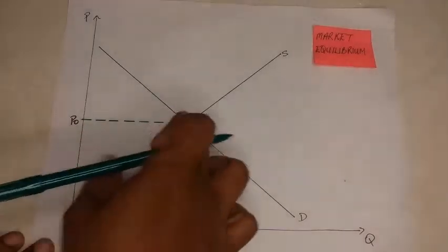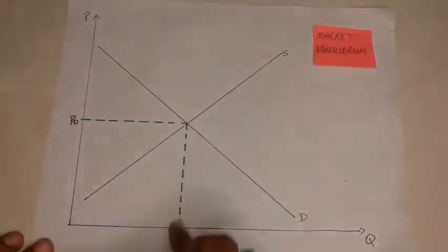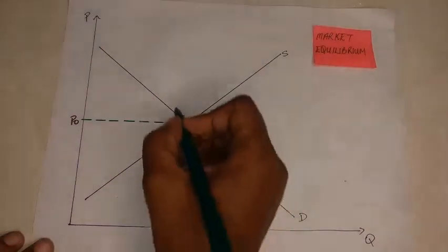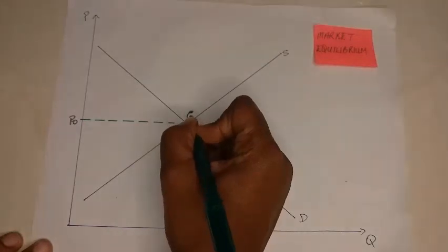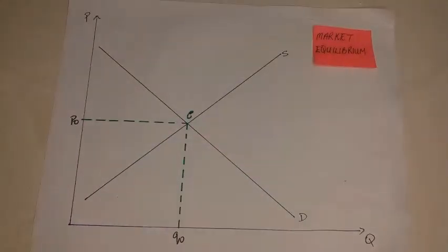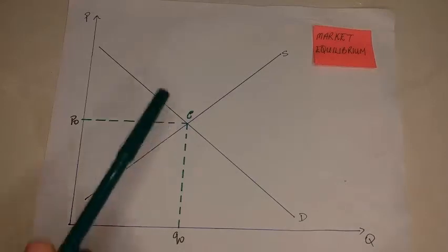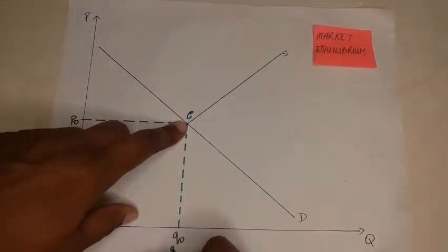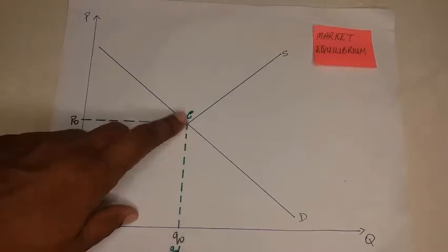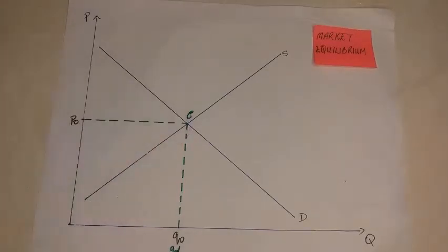Equilibrium occurs at a point such as p0, q0, and we usually would denote it with a cursive letter E at this point. When we have quantity demanded being equal to quantity supplied, we have equilibrium.